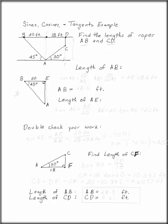The sines, cosines, and tangent example: find the lengths of rope AB and CD. So we're looking for this length and this length.